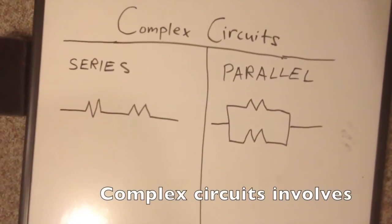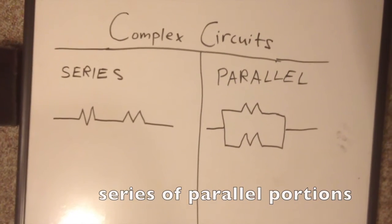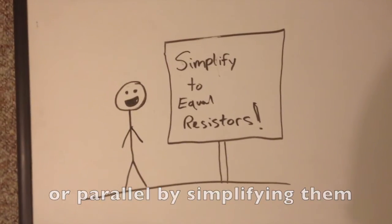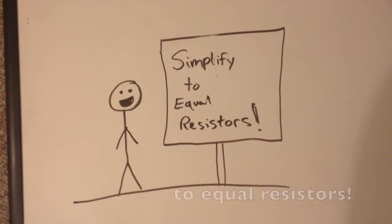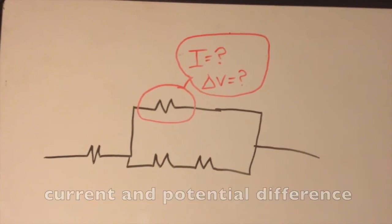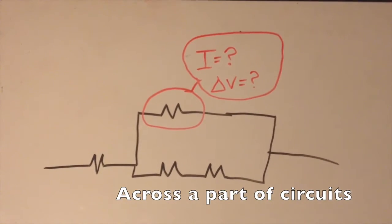Complex circuits involve series and parallel portions. Understand circuits in series or parallel by simplifying them to equal resistors. Work backwards to find the current and potential difference across a part of circuits.